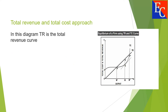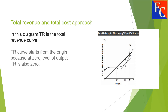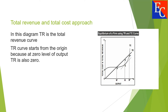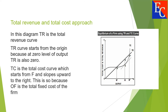In this diagram, TR is the total revenue curve. The total revenue curve starts from the origin because at zero level of output, total revenue is also zero. TC is the total cost curve, which starts from F and slopes upward to the right. OF is the total fixed cost of the firm.